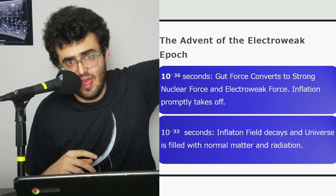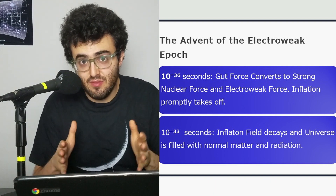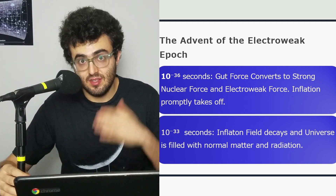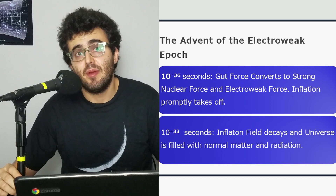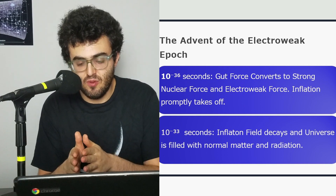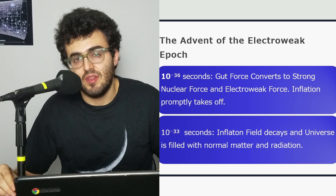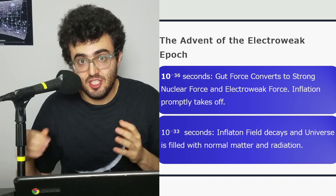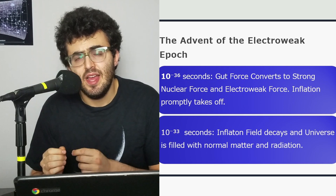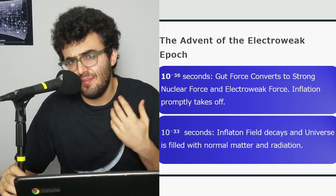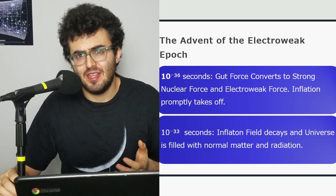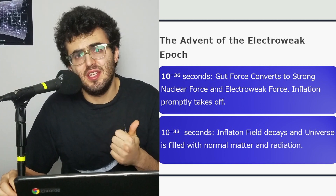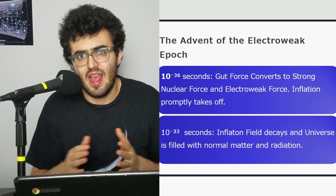The strong force is on its own, gravity is on its own, but the Electroweak Force is still there as a unified force until 10 to the minus 12, the end of this period. The moment the Electroweak Force becomes its own and splits off from the GUT, the Electroweak Epoch begins, and inflation takes off. Inflation lasts until 10 to the minus 33 seconds — a period of rapid expansion in which the universe gets its structure seeded and many of its features that it has nowadays.